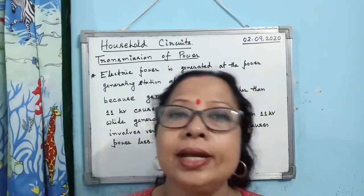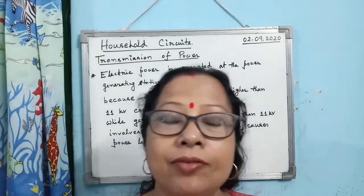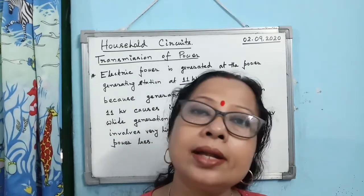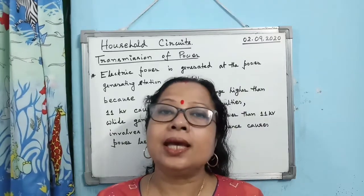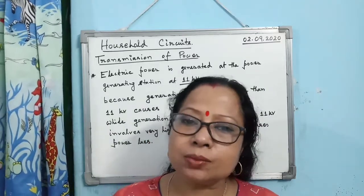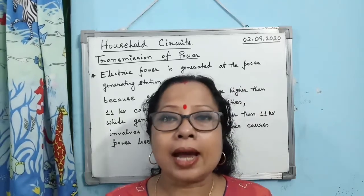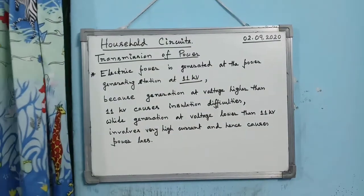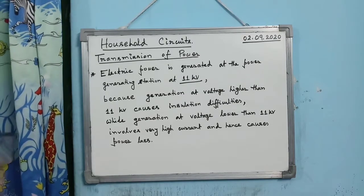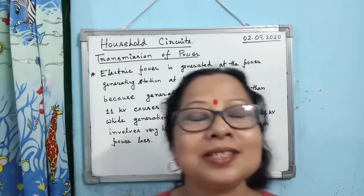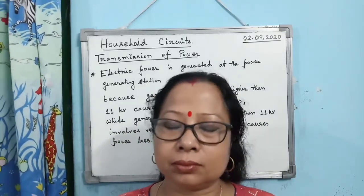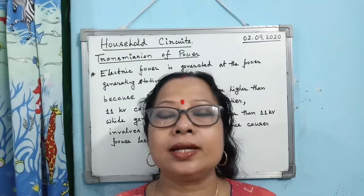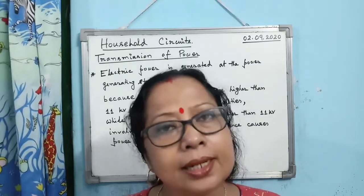If the power is generated above 11 kilovolt, insulation difficulties arise. When electricity is generated at the station, it is transmitted from one part to another within the station. The meaning of insulation difficulties is this: when electricity is transferred within the station, the cables must be properly insulated.